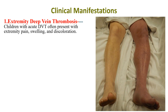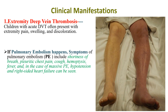Let us see the clinical manifestations based on the location of thrombus formation. The first is extremity or deep vein thrombosis. Children with acute DVT often present with extremity pain, swelling, and discoloration as seen on the image. If pulmonary embolism occurs, symptoms include shortness of breath, pleuritic chest pain, cough, hemoptysis, and fever. In massive pulmonary embolism, hypotension and right-sided heart failure can be seen.